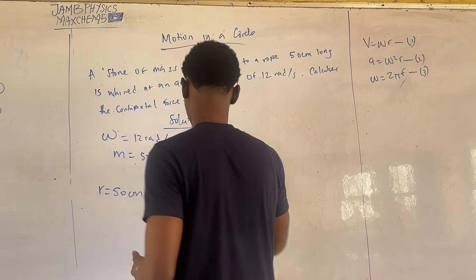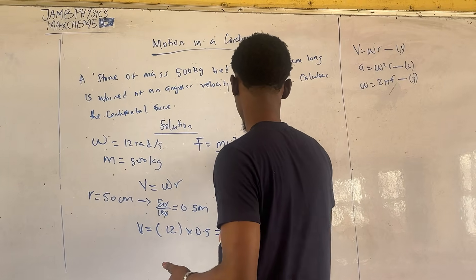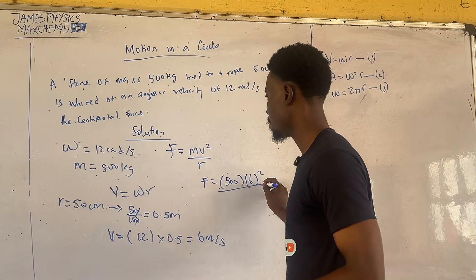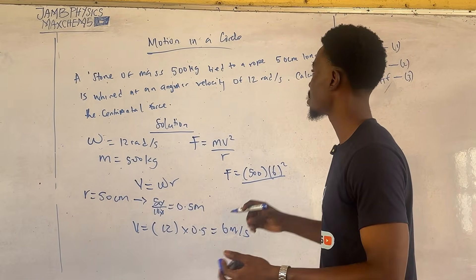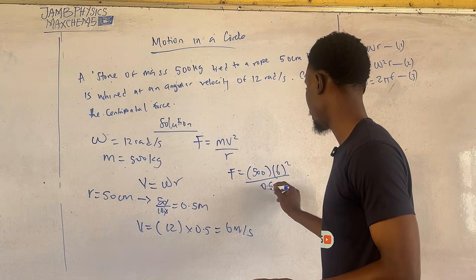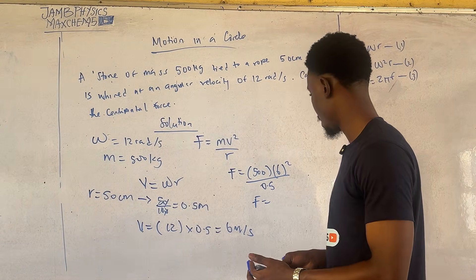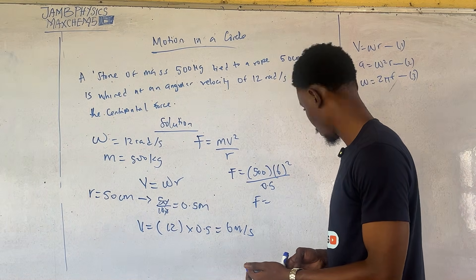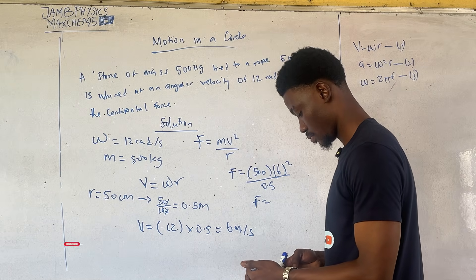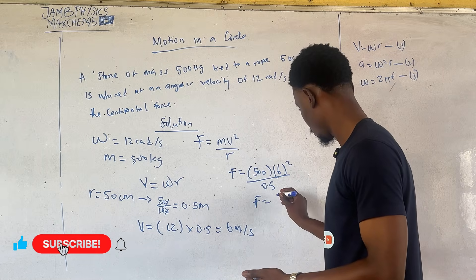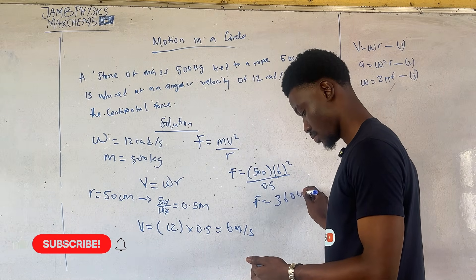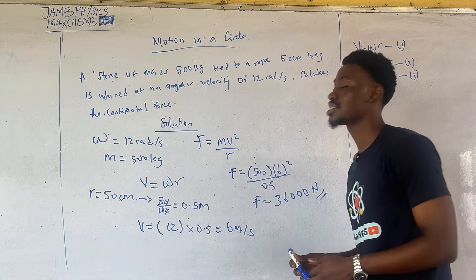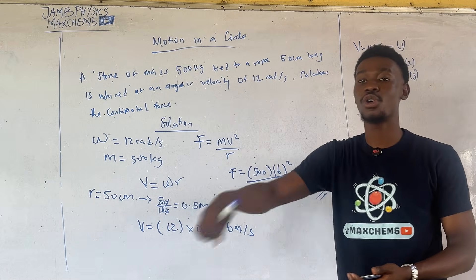Substituting into the final formula: F = mv²/R = 500 × 6² ÷ 0.5. This gives us the centripetal force that keeps the object along the circular path.